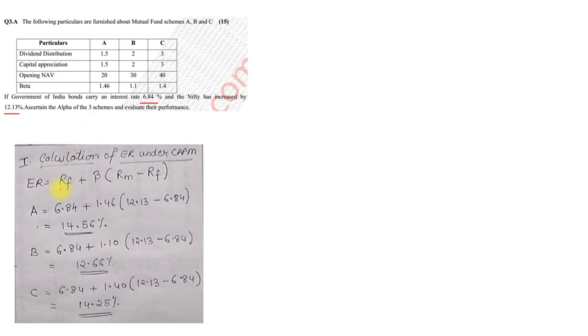So the expected return is risk-free return, which is 6.84 plus beta. Now, betas are given individually 1.46, 1.1 and 1.40 into market return. The market return given is 12.13, so Nifty has been considered as a market. Minus risk-free return, that is 6.84. For A, company A or stock A or mutual fund scheme A, the risk-free was 6.84 plus 1.46 is a beta into 12.13, that is the market return minus risk-free was 6.84. So, the value came to 14.56%.